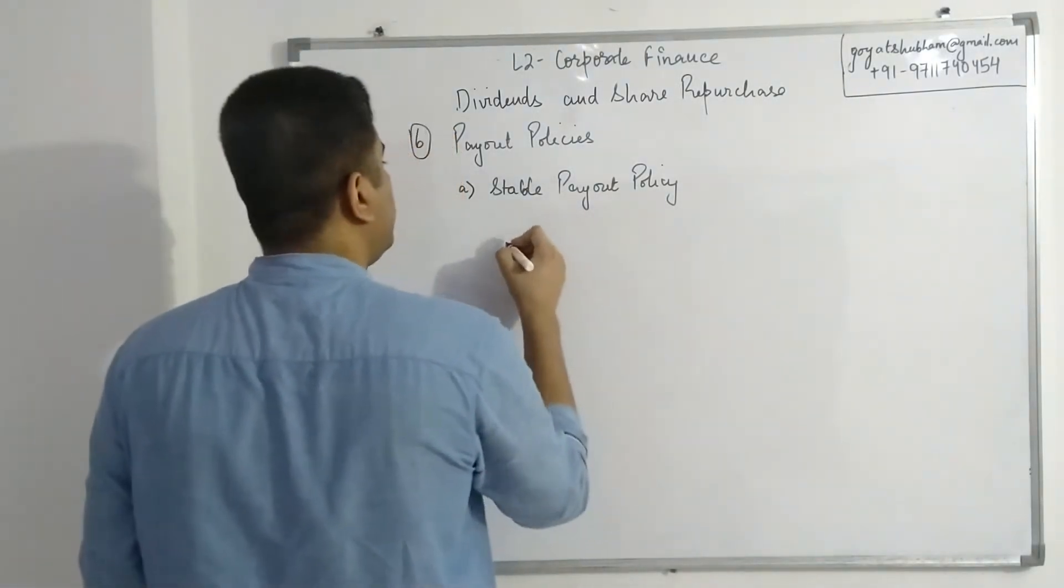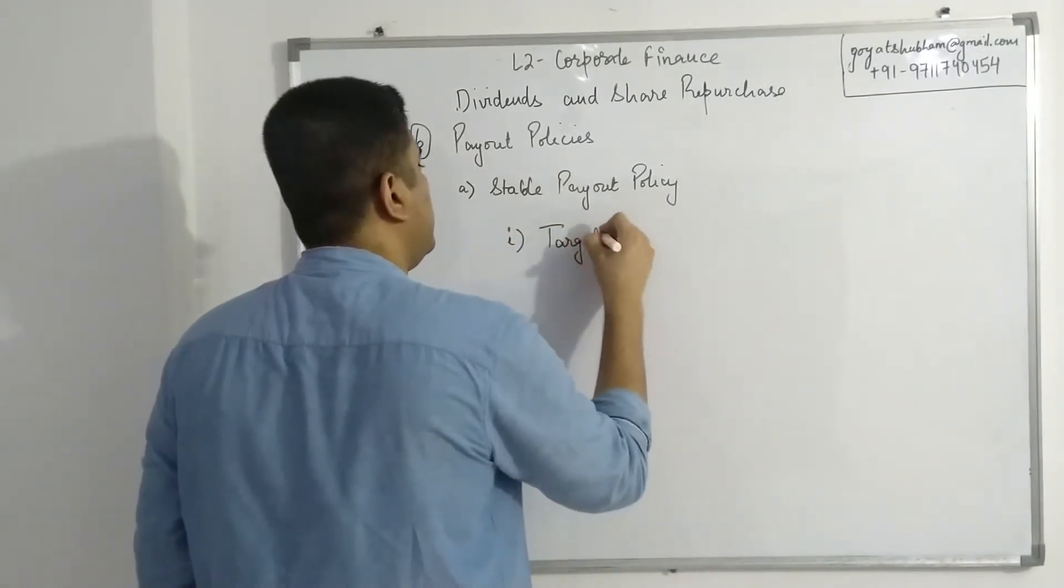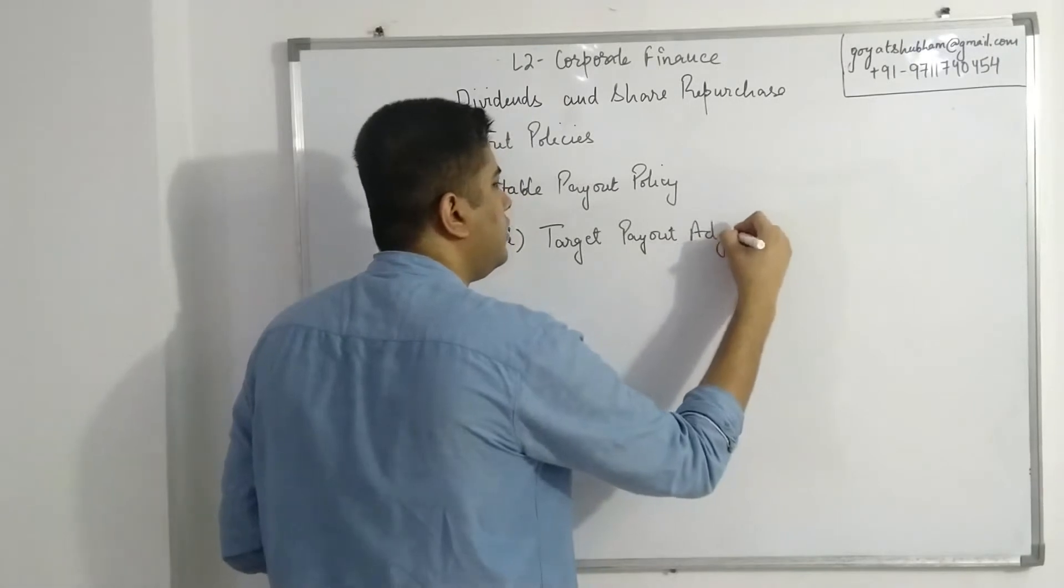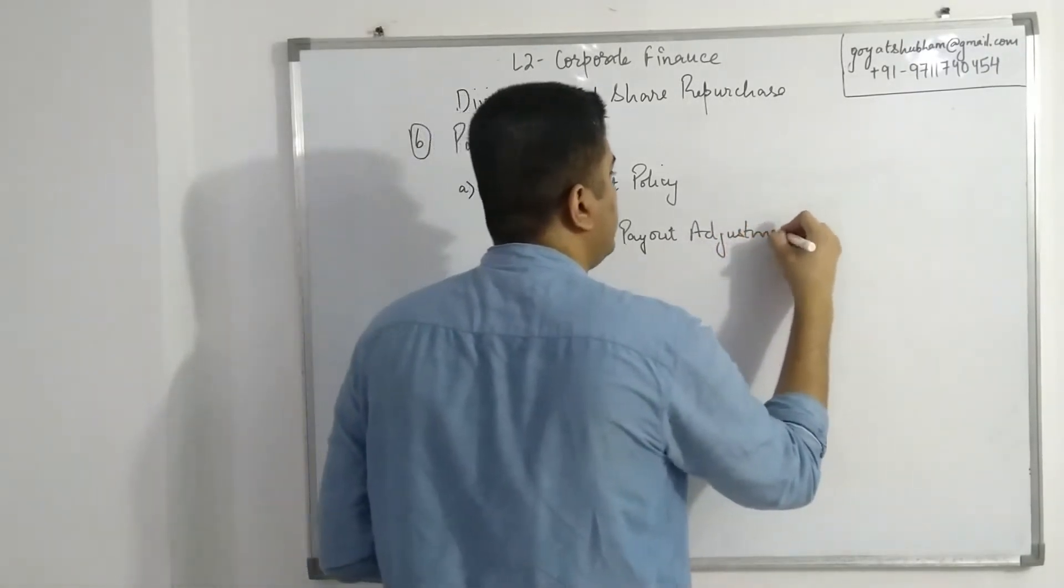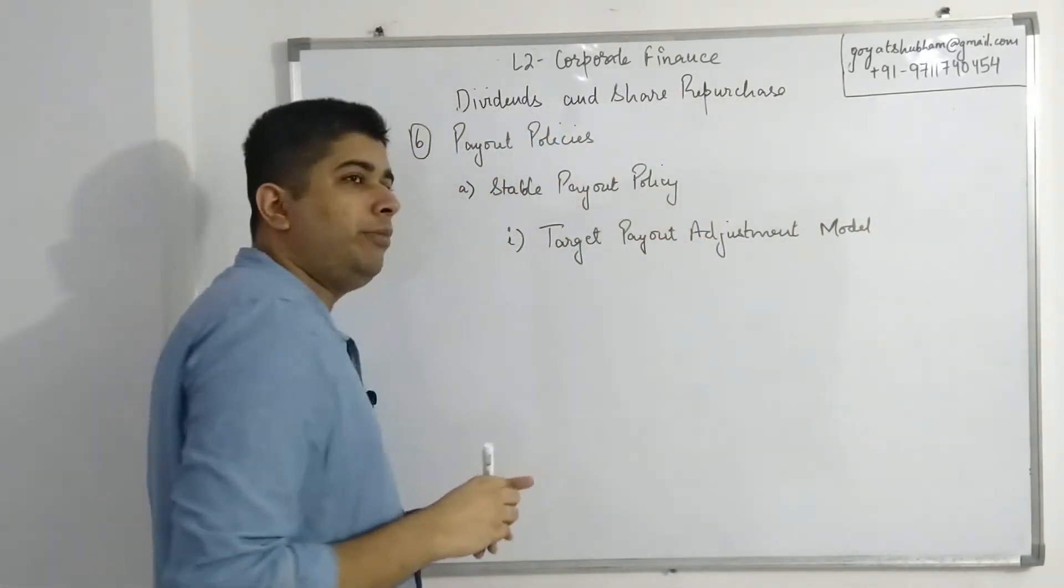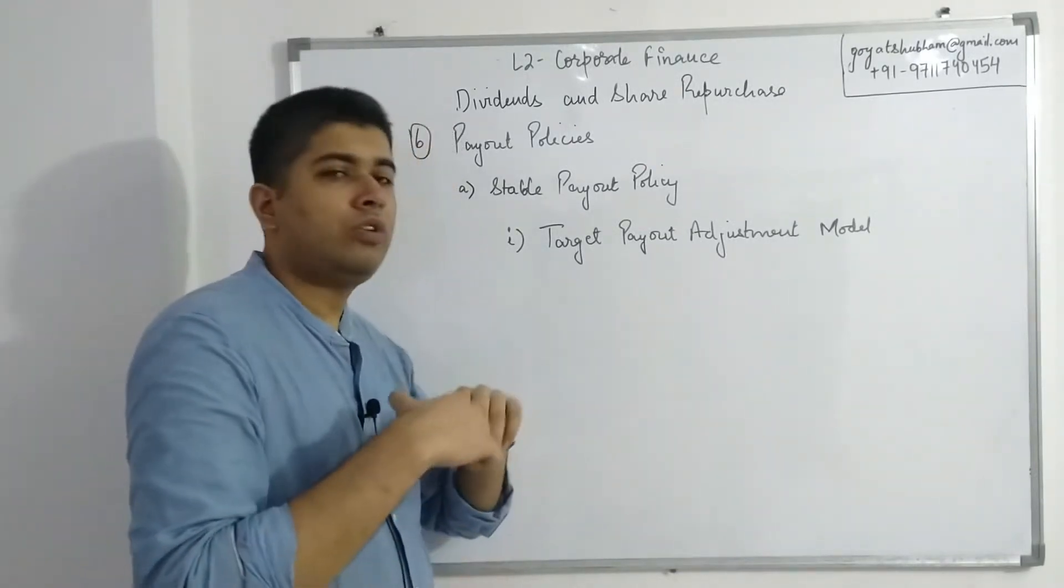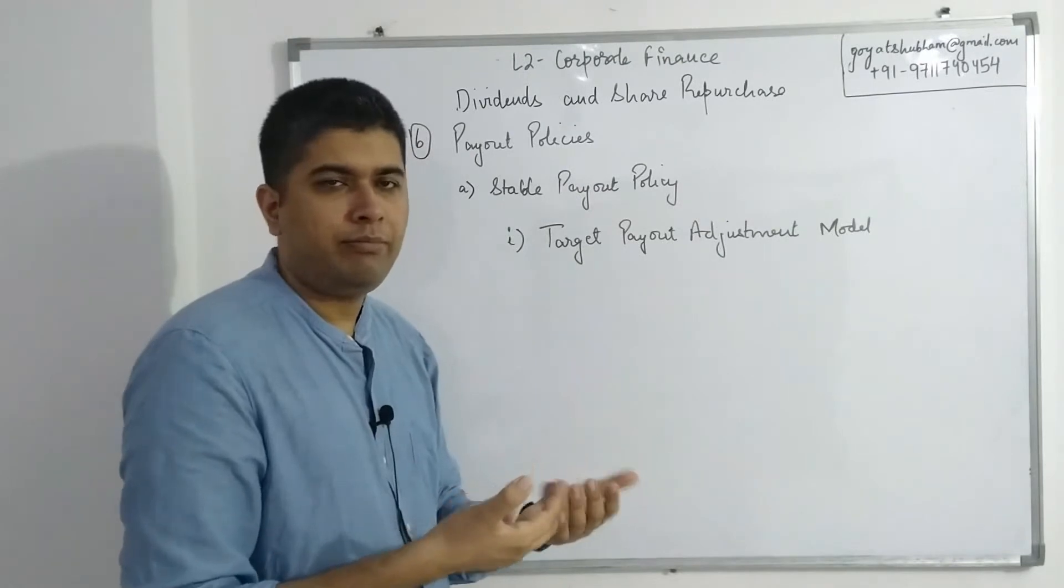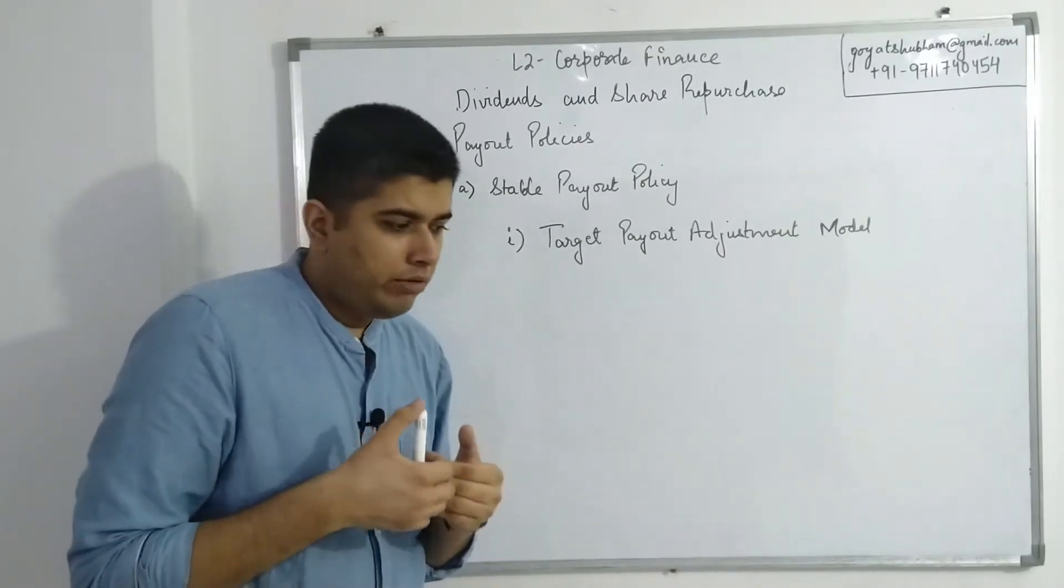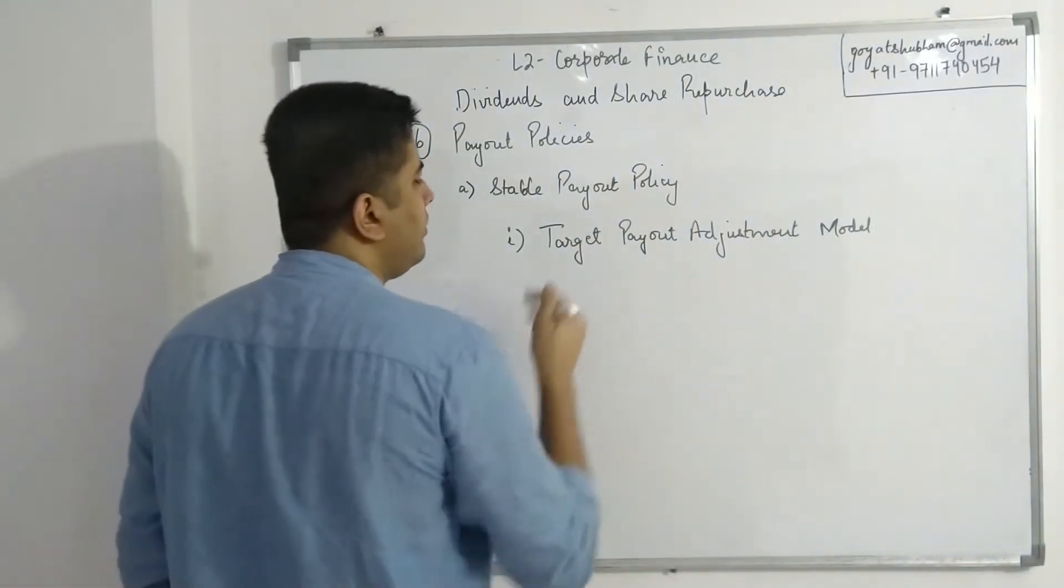Within this, the first method is known as target payout adjustment model. What it tries to achieve is it tries to create a gap between the current payout and what the company wants to achieve, and it tries to create a pathway that the company should follow. So let's take an example that would clarify it further.